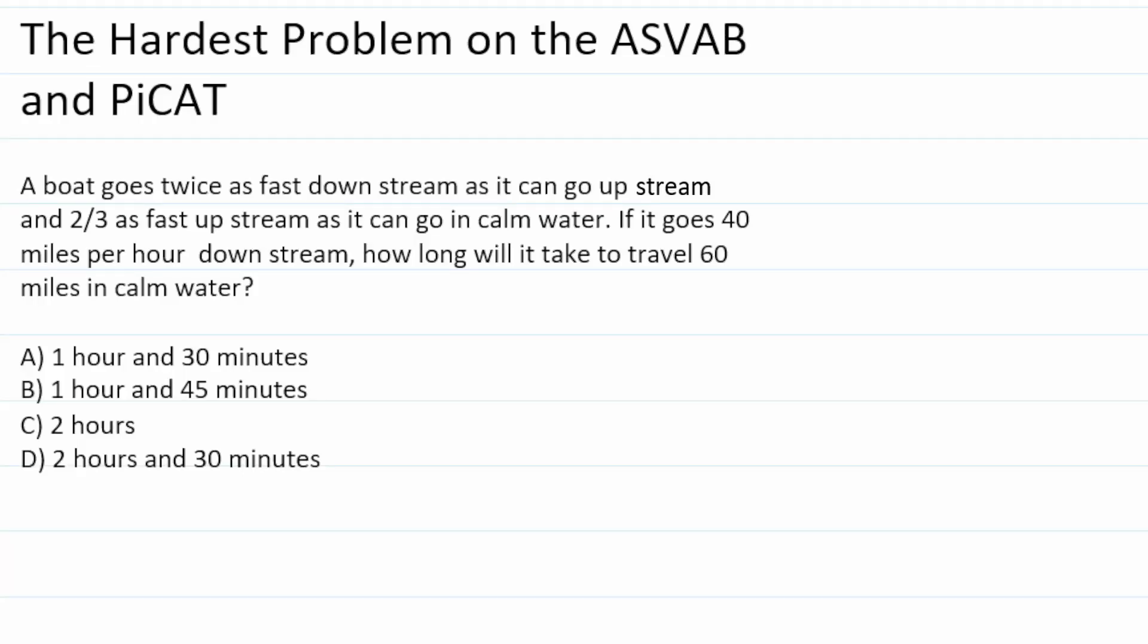In this video I wanted to look at one of the hardest types of problems you may see on the ASVAB and PiCAT. It says a boat goes twice as fast downstream as it can go upstream and two-thirds as fast upstream as it can go in calm water. If it goes 40 miles per hour downstream, how long will it take to travel 60 miles in calm water?